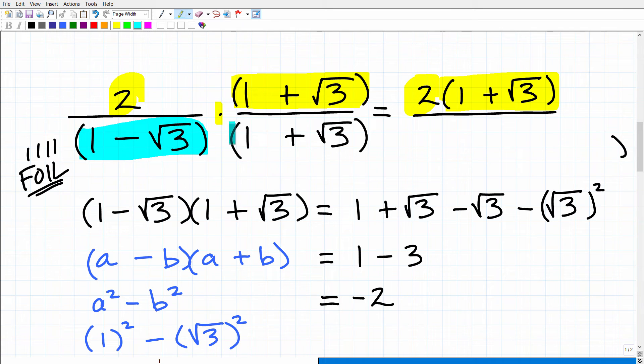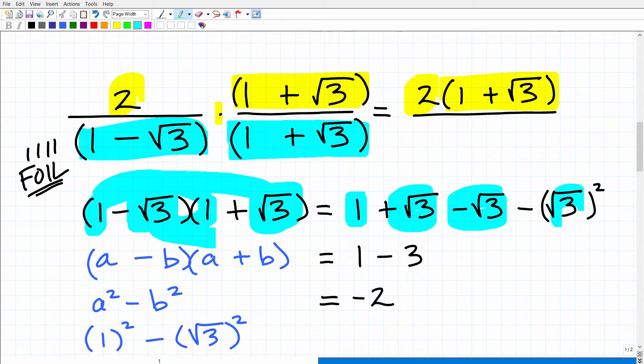So let's focus on the denominator now. So we have 1 minus the square root of 3 times 1 plus the square root of 3. So 1 times this 1, that's our first. 1 times 1 is 1. 1 times this positive square root of 3 is positive square root of 3. Then we have our inner. That's negative square root of 3 times 1, which is negative square root of 3. And then we have a negative square root of 3 times another positive square root of 3, which is going to be the same as negative square root of 3 squared, or a square root of 3 squared with a subtraction sign in front of it.